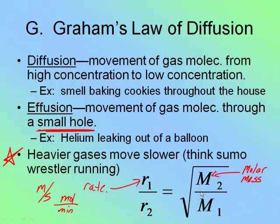Typically they'll say something like: an unknown gas is placed into a tube with methane. If methane moves at a rate of X and the unknown gas moves at a rate of Y, what's the weight of the unknown gas? If I have rate one, rate two, and the mass of one of them, I can find the mass of the other. Graham's Law is super easy — it's plug and chug because this is the only formula we're going to use. You'll always be given three of the four factors and have to find the other one.